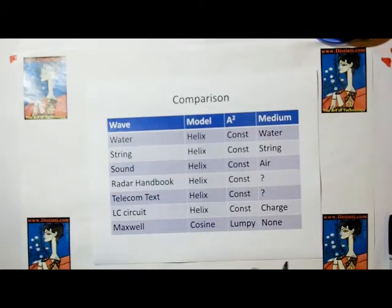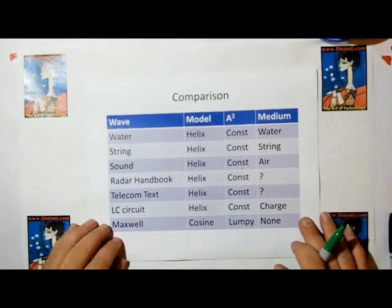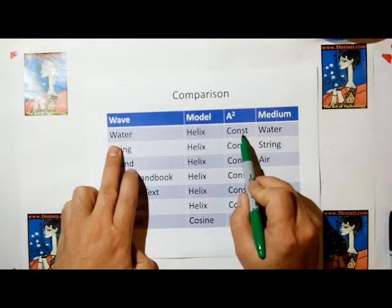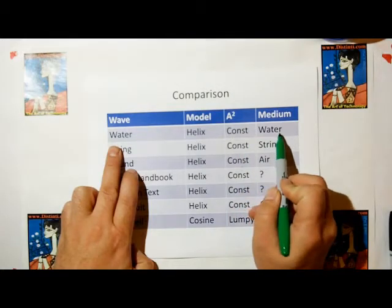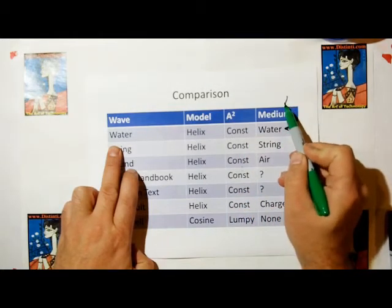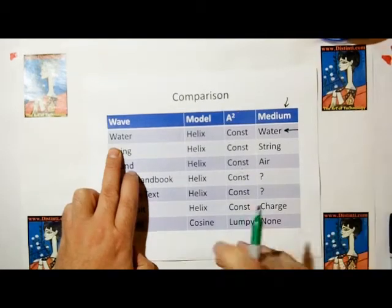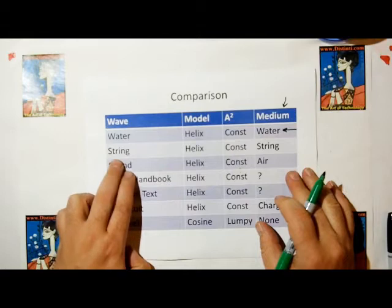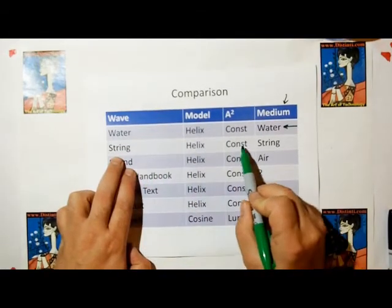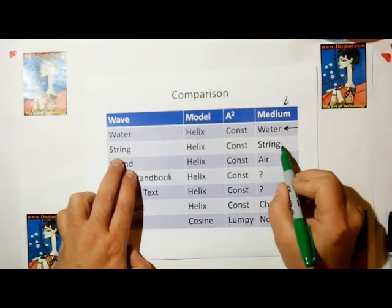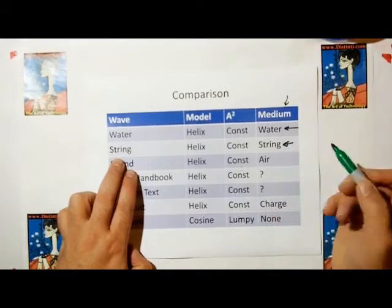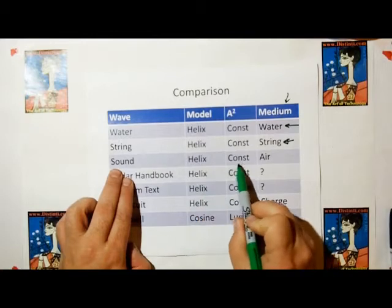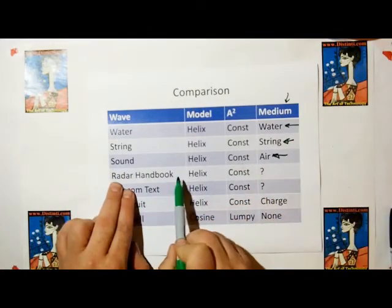So let's look at all the other waves that we know, or not all, but a good portion of the other waves we know of. Water wave is a helix. It's got constant amplitude and amplitude square over time, and the medium, the medium is the stuff that the wave has to have to go through. In other words, you can't have water waves without water. String waves also map to a helix. They have a constant energy over propagation, and they need the medium of string to propagate over. Sound waves, same thing. Helix, constant, and their medium is air.